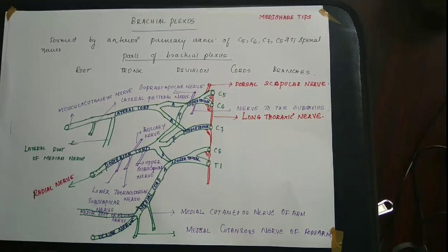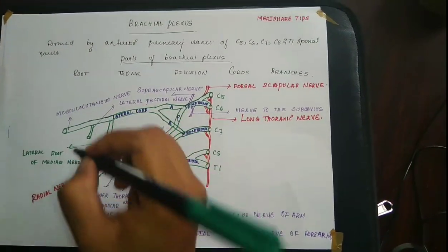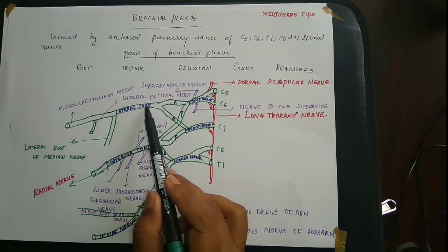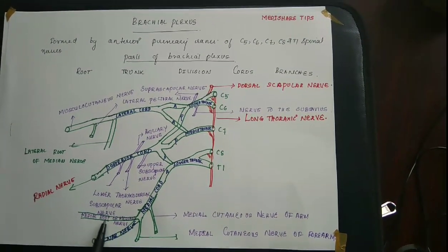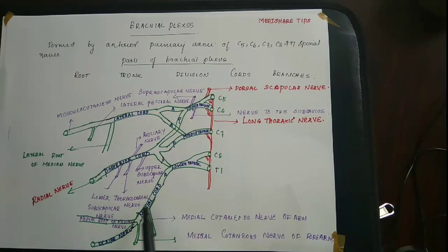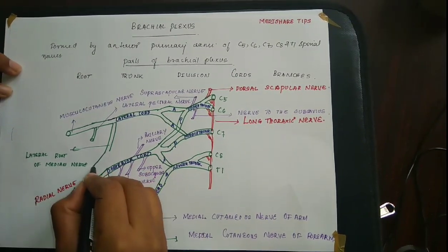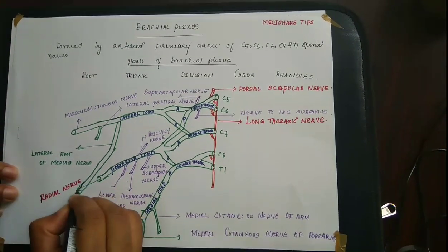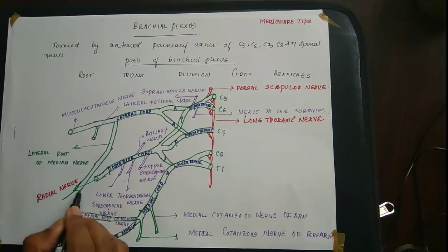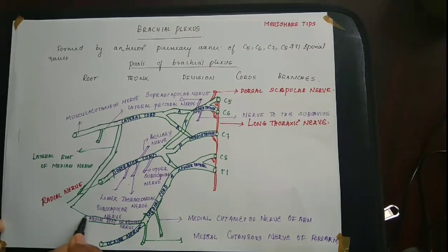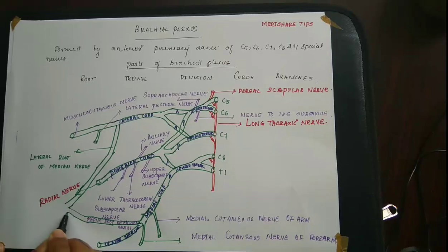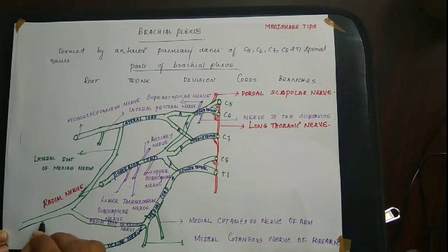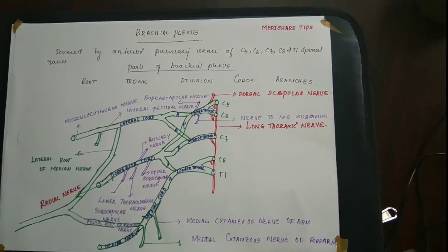Now we will see the formation of the median nerve. The median nerve is formed from two roots: it receives a lateral root from the lateral cord and a medial root from the medial cord of the brachial plexus. These two roots combine together to form the median nerve.